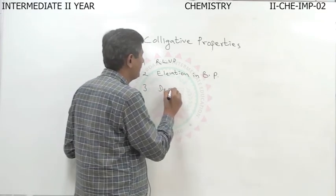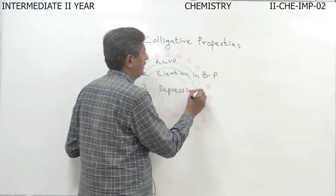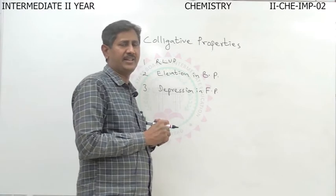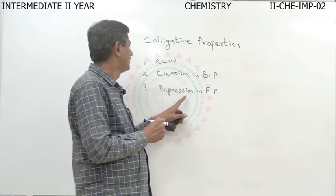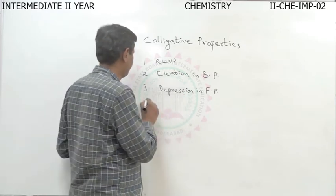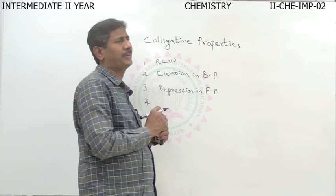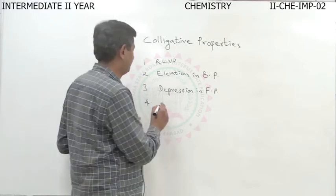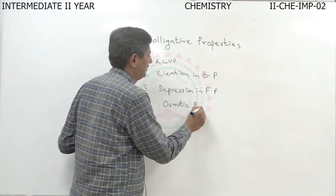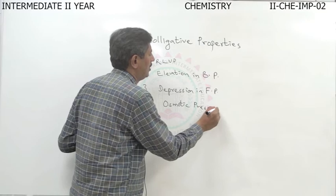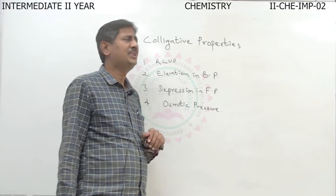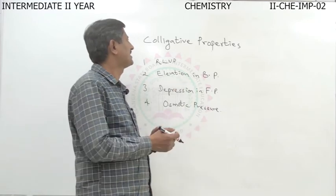Third is depression in freezing point. Fourth is osmotic pressure. So these four properties are called colligative properties.